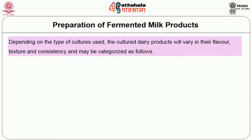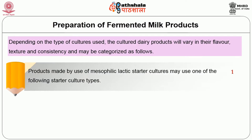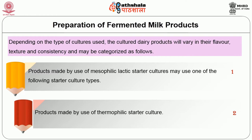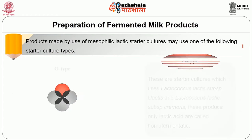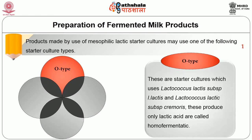Depending upon the type of cultured dairy products, they vary in flavor, texture and consistency. Products made by use of mesophilic lactic starter culture may use any one of the following starter culture types. The first is O type: these are starter cultures which use Lactococcus lactis subspecies lactis and Lactococcus lactis subspecies cremoris. These produce only lactic acid — they are homofermentative, meaning they produce only one type of product. The next category is D type: these include starter cultures which contain, in addition to O type bacteria, a flavor-producing lactic acid bacteria known as Streptococcus lactis subspecies lactis diacetylactis.